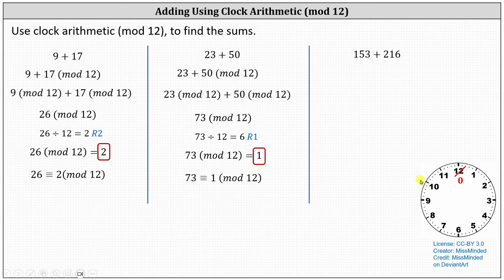Verifying this result on the clock, we would start with the hour hand pointing at 0 and move ahead 73 hours. Because 73 divided by 12 equals 6 with a remainder of 1, we'd have 6 complete rotations around the clock, and then 1 additional hour for 73 hours. Starting with the hour hand at 0: 12 hours, 24 hours, 36 hours, 48 hours, 60 hours, 72 hours, plus 1 brings us to 73 hours. It's 1 o'clock, indicating 73 mod 12 equals 1.